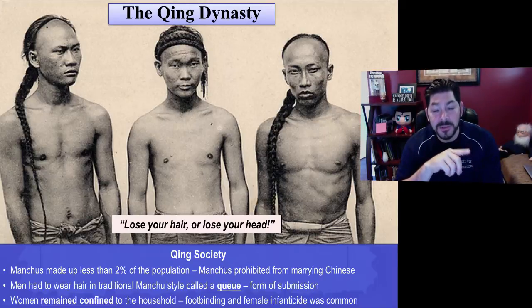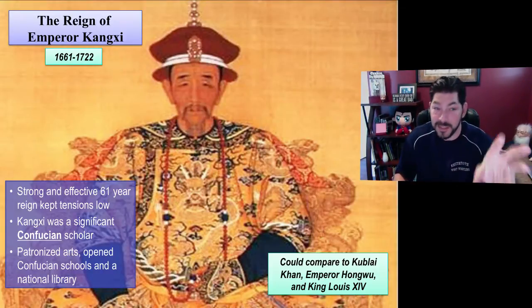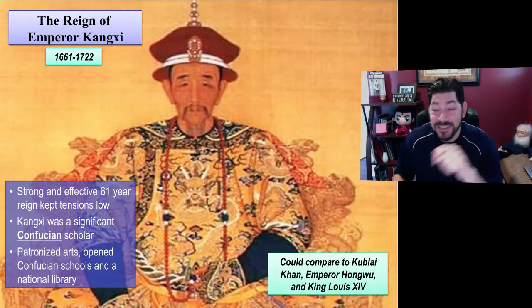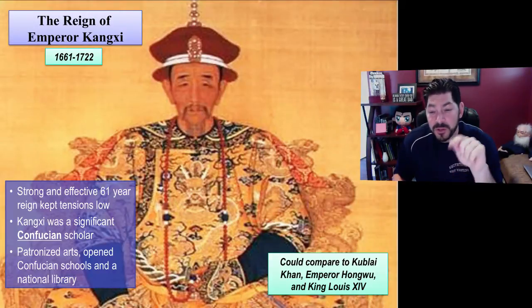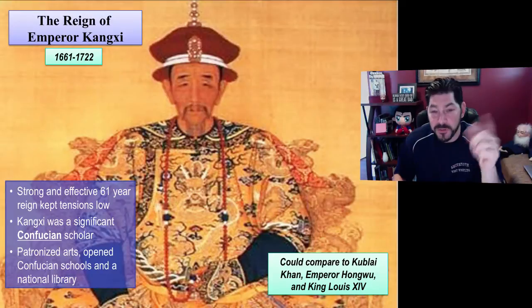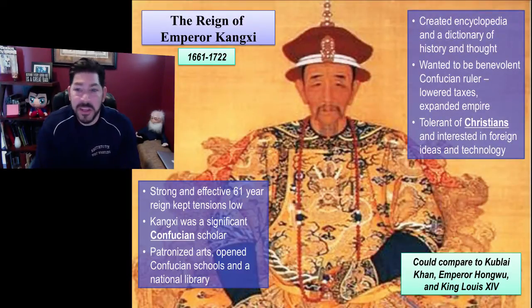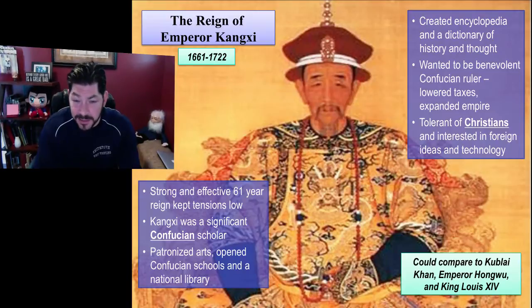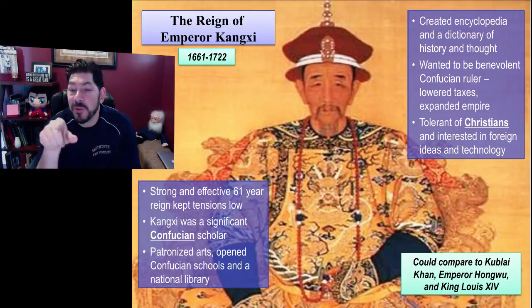Women also remained confined to the household. Foot binding continued. And even female infanticide was very common because having a male child elevated your social status. Now, the greatest leader of the Qing Dynasty, and perhaps the greatest emperor of all of China, is Emperor Kangxi. Kangxi ruled for 61 years as an absolute monarch of China. We can compare him to Emperor Hongwu, to Kublai Khan, and to other figures we'll see later, especially King Louis XIV. Kangxi not only led a Confucian government but was a Confucian scholar himself, creating an encyclopedia and dictionary of history and thought. He was tolerant of other faiths like Christianity and was interested in Western technology and ideas. Take a look at this documentary and then answer the question on your worksheet comparing Emperor Kangxi to either Kublai Khan or Emperor Hongwu.